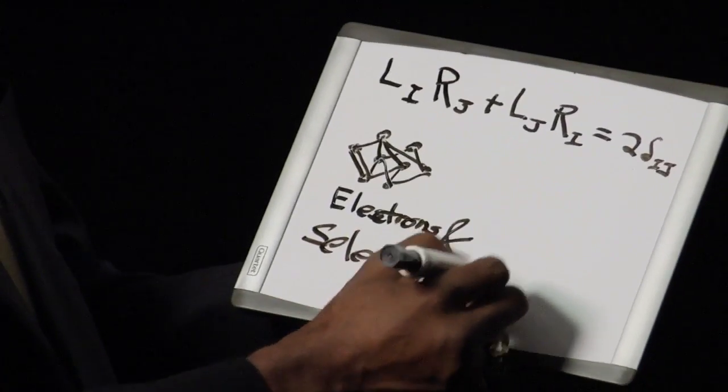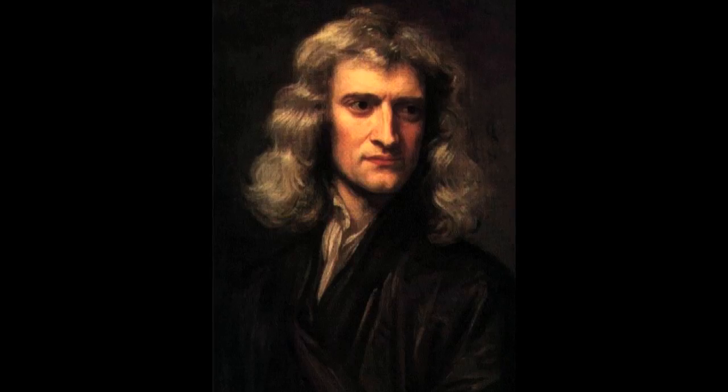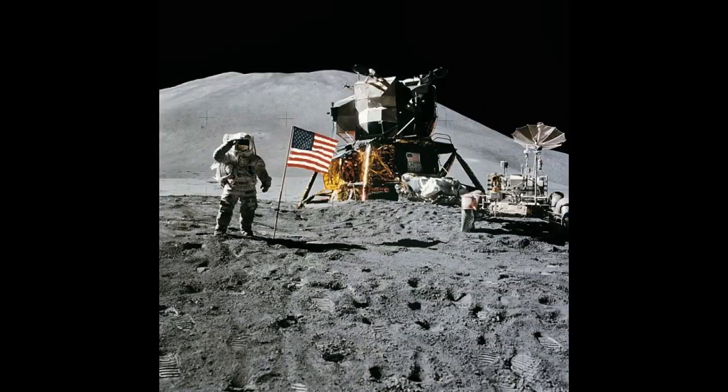People often ask what's string theory? Newton taught us if we want to understand everything, think of the universe as somehow being composed of little elements that behave very much like billiard balls. We have a technical name for them. We call them geometrical point particles. The concept of geometrical point particles got us to the moon.